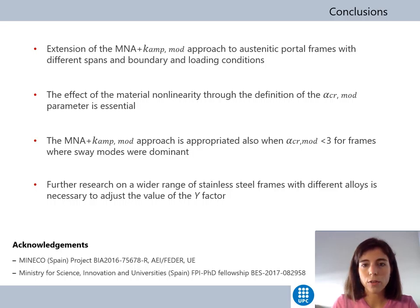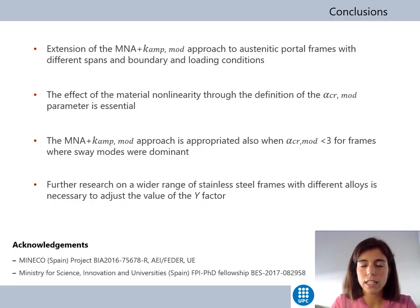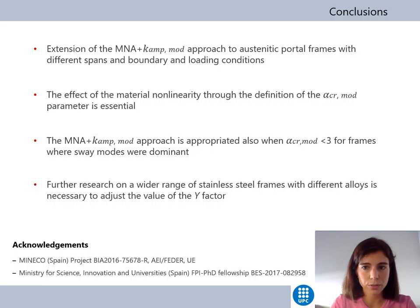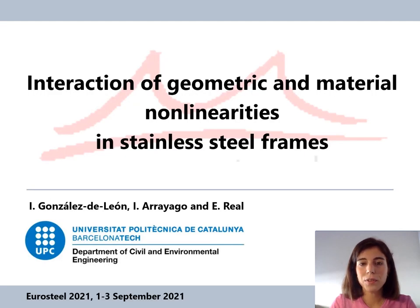This study has extended the global plastic design approach to austenitic portal frames with different spans, boundary, and loading conditions. The analysis of the results shows that it is essential to consider the effect of material nonlinearity through the definition of the modified alpha-crit parameter. The MNA plus amplified sway effects approach seems to be appropriate also when modified alpha-crit is less than 3 for frames where sway modes are dominant. However, further research on a wider range of stainless steel grades with different alloys — ferritic and duplex — is necessary to adjust the value of the y-factor.